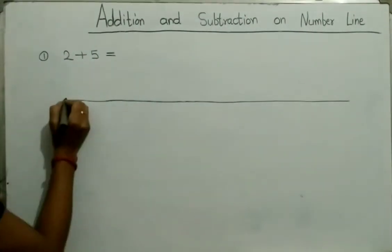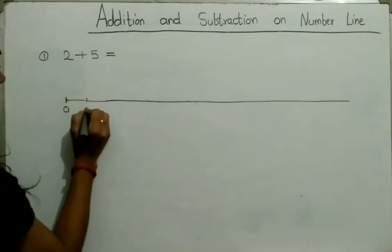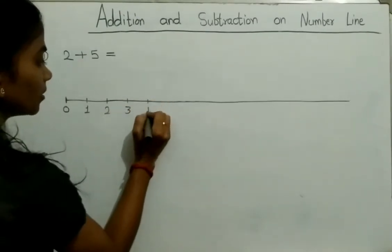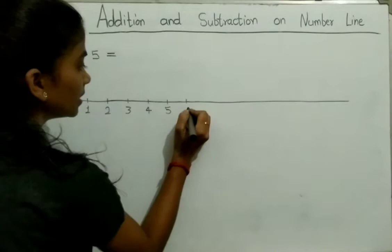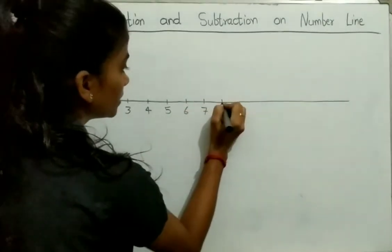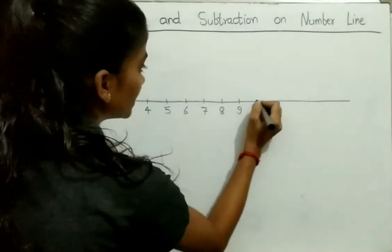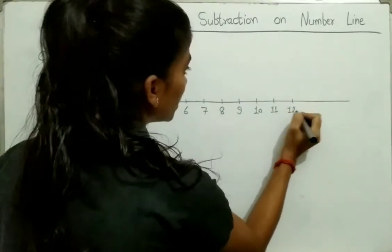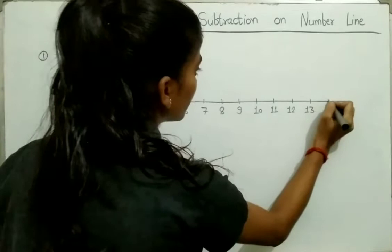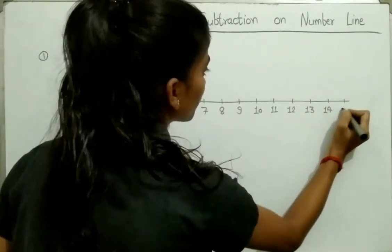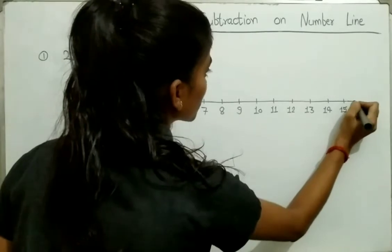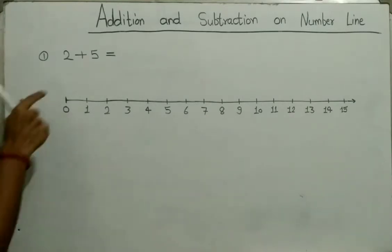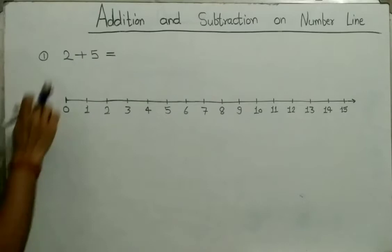We start from 0: 0, 1, 2, 3, 4, 5, 6, 7, 8, 9, 10, 11, 12, 13, 14, 15. This is the number line. Here we see the first number is 2.